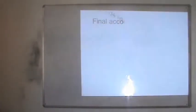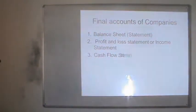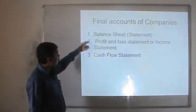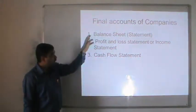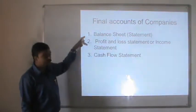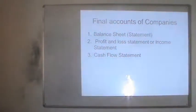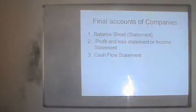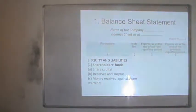The final accounts of the companies are divided into three parts: the balance sheet or statement of balance sheet, profit and loss statement or income statement, and cash flow. Out of these three, the first two are mandatory for a company as per the Companies Act 2013. We are discussing today the balance sheet, final accounts, and cash flow as per the Companies Act 2013.